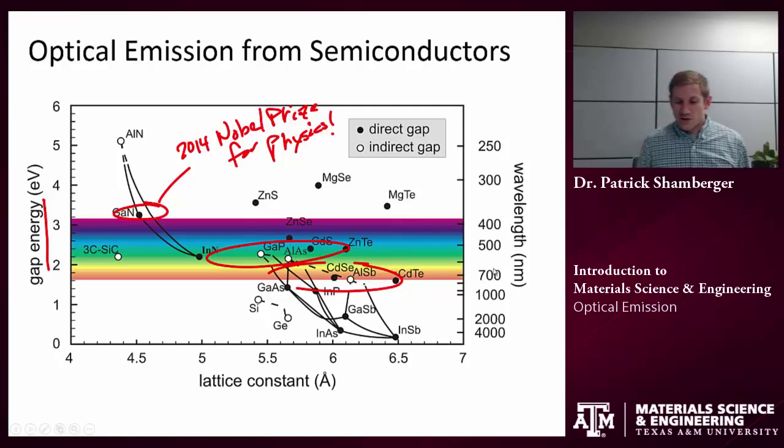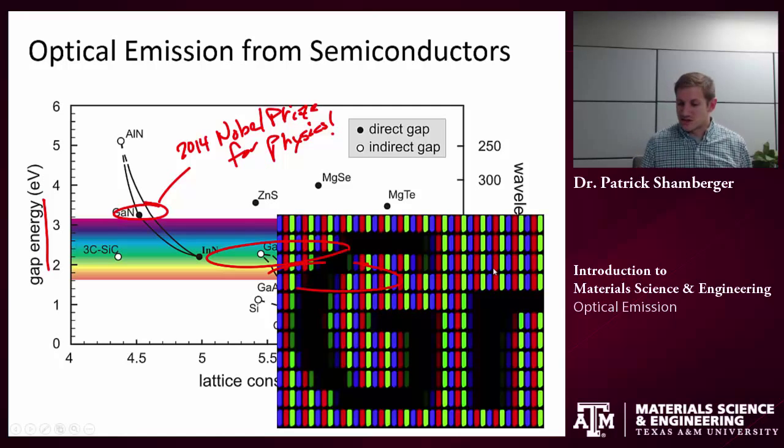Now, why would that be so exciting? I mean, we already have red and green. Why is blue important? Blue is important for two reasons. One is that for any sort of a display, we typically make this by having three pixels: red, green, and blue. Without the blue, you can't combine them to get all the colors in the spectrum.